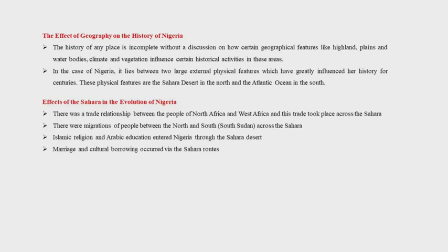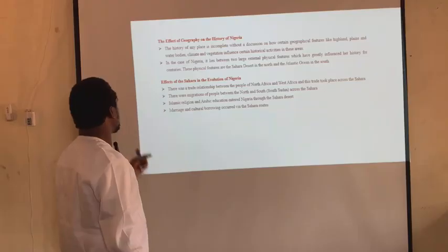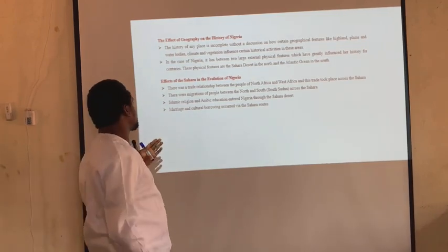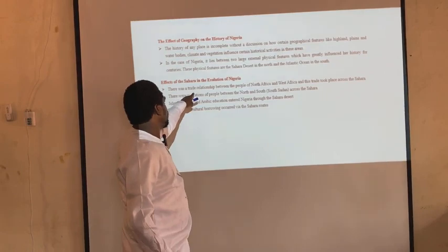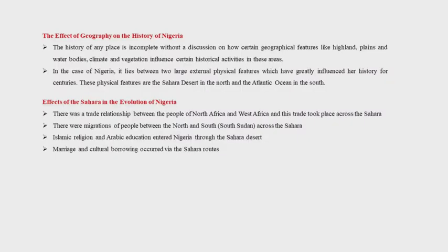We will look at the effect of the Sahara Desert in the evolution of Nigeria. There was a trade relationship between the people of North Africa and West Africa, and this trade took place across the Sahara Desert. There were also migrations of people. The first effect is that there was a trade relationship between the people of West Africa and the people of North Africa. The second effect is that there were migrations of people between the north and the south, across the Sahara.